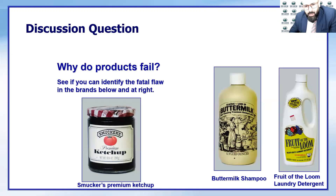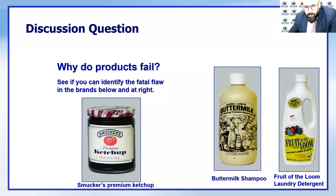Let's take a look at some more examples of why products failed. On the left side is a ketchup from Smuckers — you don't expect ketchup to be in that container, so the packaging may be unfamiliar to customers. On the right side, there's a buttermilk shampoo and Fruit of the Loom laundry detergent — the naming could be not an excellent way to brand these products.